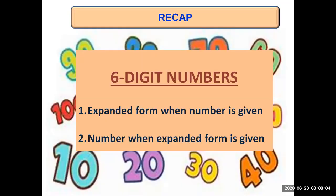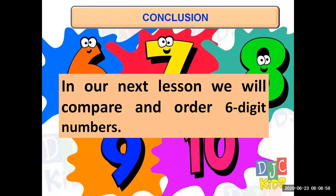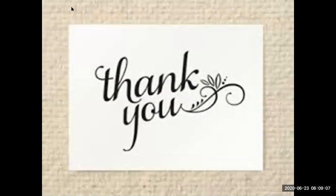Today we covered six digit numbers — expanded form. When a number was given, we wrote its expanded form, and when the expanded form was given, we wrote the number. This is your homework for today, 23rd June 2020: you have to do question number 11, 12 and 13 in your books. If you cannot understand anything or you are finding any difficulty, just watch this video again and you will be satisfied. Page number 32, questions 11, 12 and 13 to be done in books. In our next lesson we will do comparison and ordering of six digit numbers. Thank you so much and stay home, stay safe.